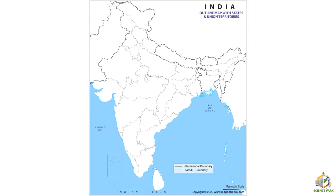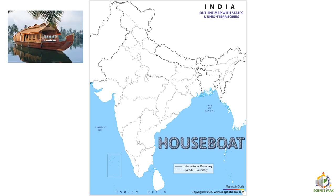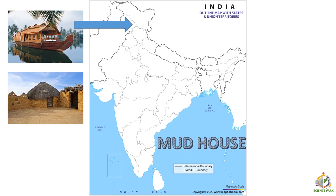Now we are going to see the variation of shelter across India using a blank map of India. The picture on the left shows a type of shelter called a houseboat. Houseboats are mainly located where there are big, huge lakes — one such example is Dal Lake in Srinagar. Next is the mud house. These types of houses are mainly located in the desert areas of Rajasthan, where there is very less rainfall. Mud houses also help maintain the temperature inside.